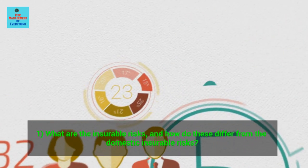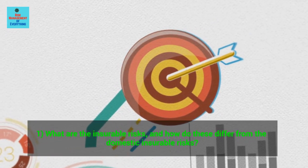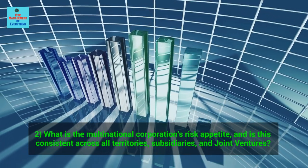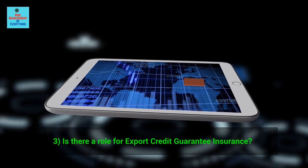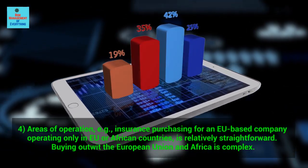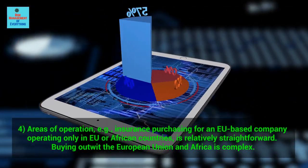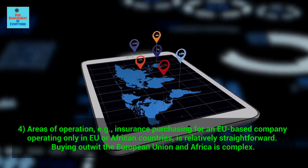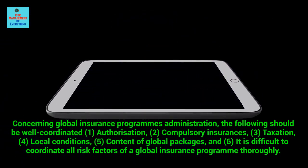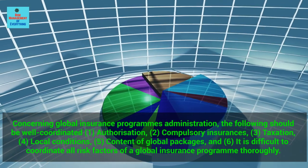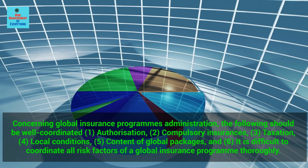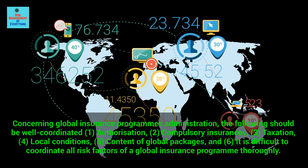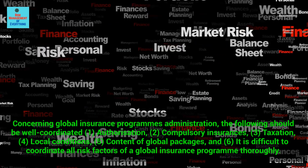Global insurance programs influencing factors: Factors that should be considered for a global insurance packages contract include: 1. What are the insurable risks, and how do these differ from domestic insurable risks? 2. What is the multinational corporation's risk appetite, and is this consistent across all territories, subsidiaries, and joint ventures? 3. Is there a role for export credit guarantee insurance? 4. Areas of operation — insurance purchasing for an EU-based company operating only in the EU is relatively straightforward, but buying outside the European Union and Africa is complex. Concerning global insurance programs administration, the following should be well coordinated: authorization, compulsory insurances, taxation, local conditions, content of global packages, and coordination of all risk factors.